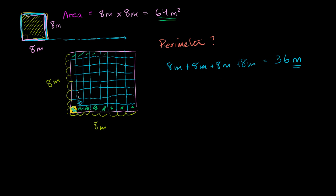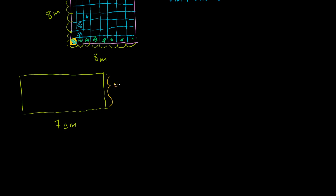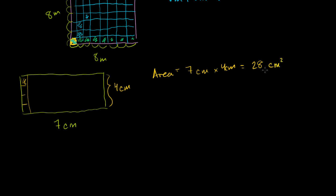For area we got square meters, because we're counting two-dimensional measurements. Now let's make it more interesting. What if instead of a square, I have a rectangle? Let's say that this side over here is 7 centimeters, and the height is 4 centimeters. So the area of this rectangle is going to be 7 times 4 centimeters. We could draw 7 rows, each of them having 4 square centimeters, so you'd have 7 times 4 square centimeters, equal to 28 centimeters squared.